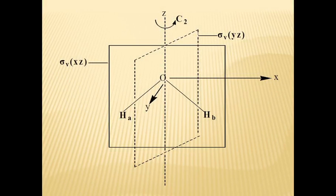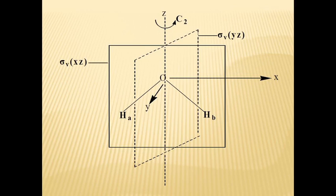Every molecule possesses the symmetry element E, called identity. Thus water has E as the first symmetry element. Other symmetry operations include C2, a rotational axis at the Z axis, and two vertical planes σXZ and σYZ. It can be noticed that σXZ is the molecular plane and σYZ is the vertical plane. Thus there are four symmetry elements in a C2V point group.